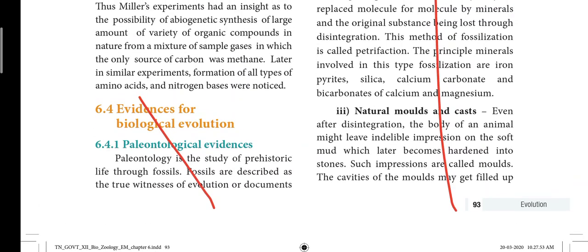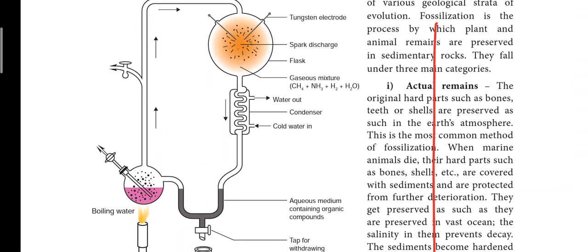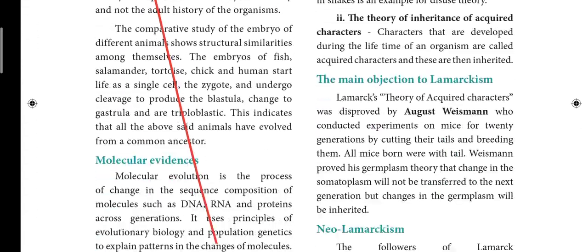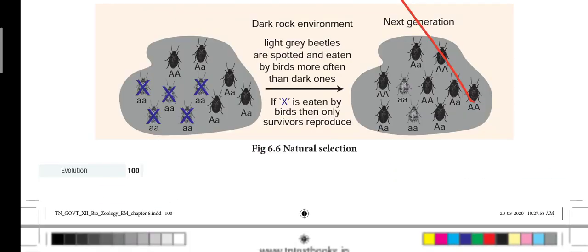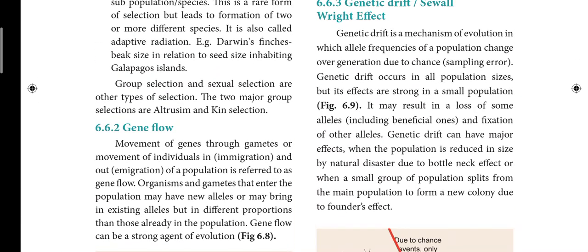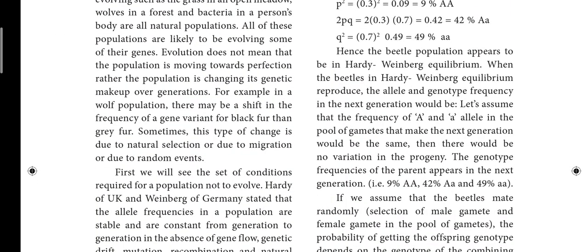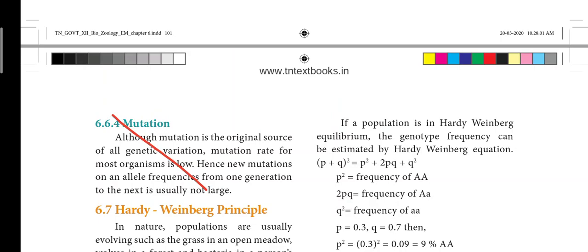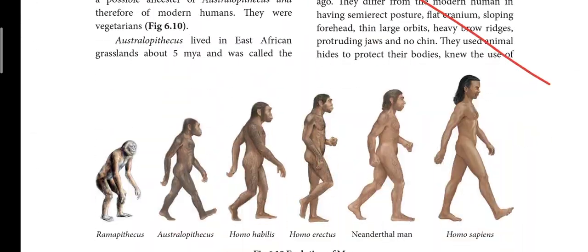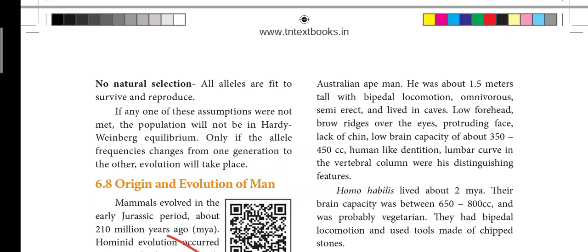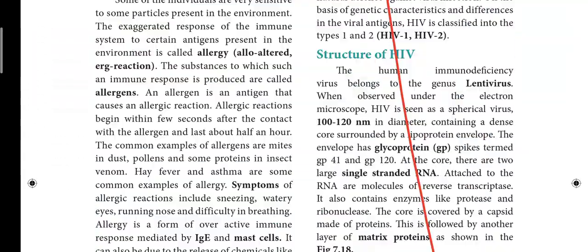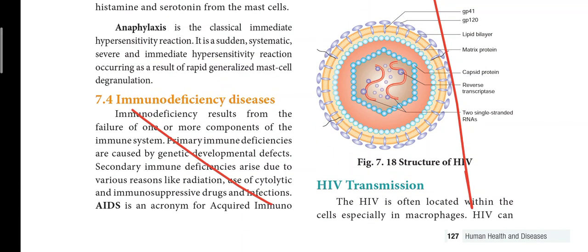Next page is 93. Heading 6.4 — Evidences for Biological Evolution. Next page is 95. Page 96 is on the left side. Next page is 100, then page 101. Heading 6.6 — Mutation — next heading on page 101 with one line. This is the 6th lesson. Next is heading 6.8 on page 103 — Origin and Evolution of Man — that heading is struck out with one heading remaining.